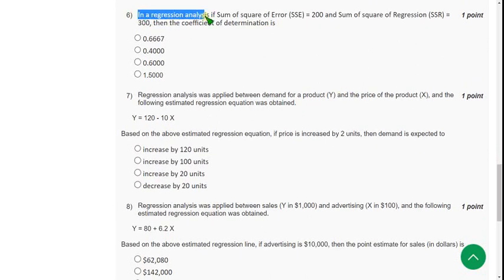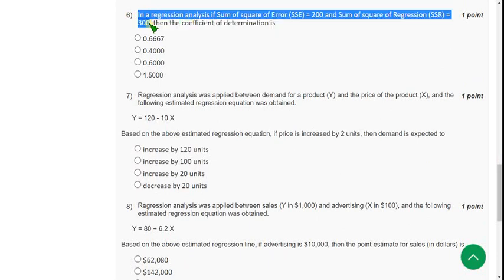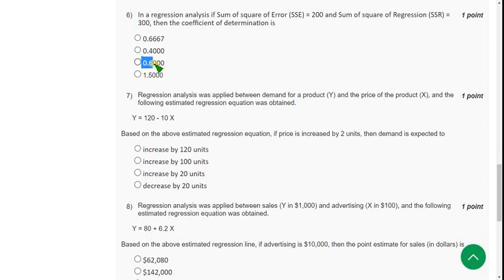And moving on to the sixth one. In a regression analysis, if sum of square of error SSE is 200 and SSR is 300, then the coefficient of determination is. So for sixth question, the correct answer is option 3. 0.6000. I mean 0.6. Is the correct answer for sixth question.